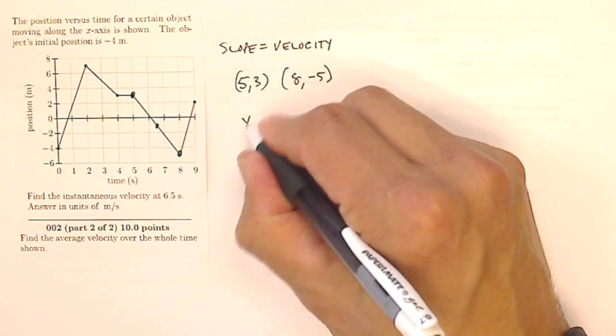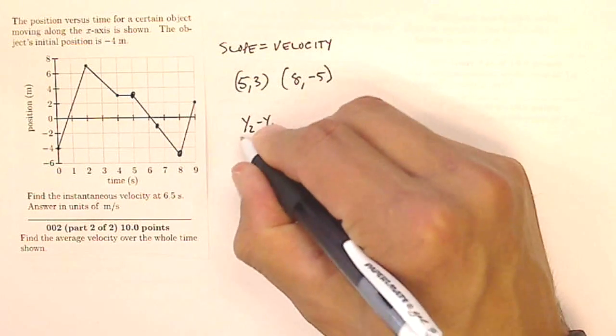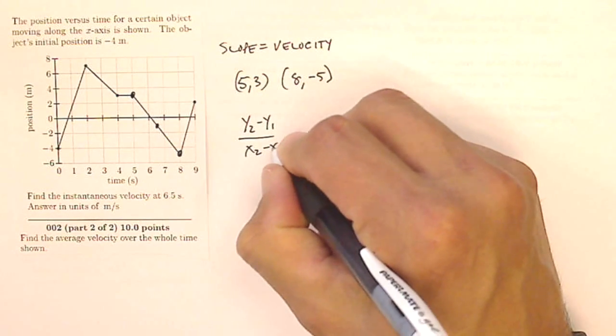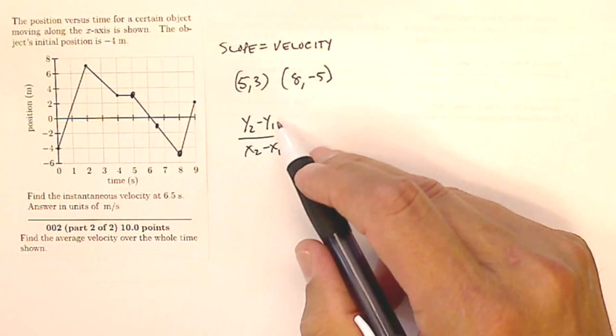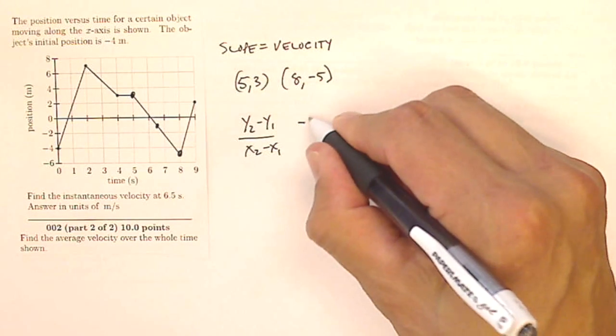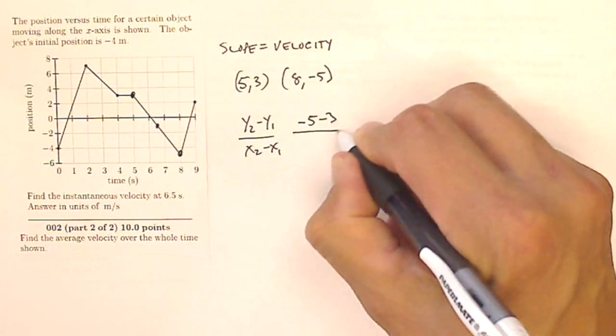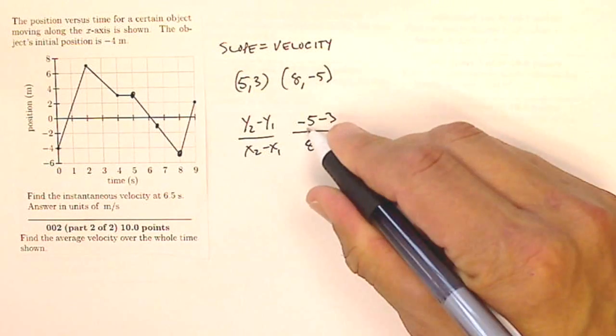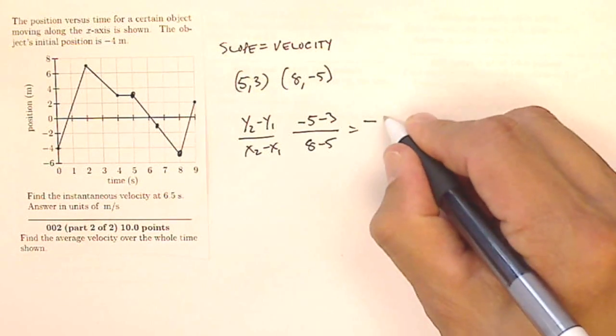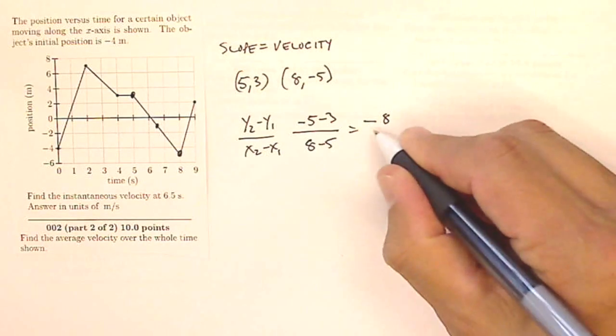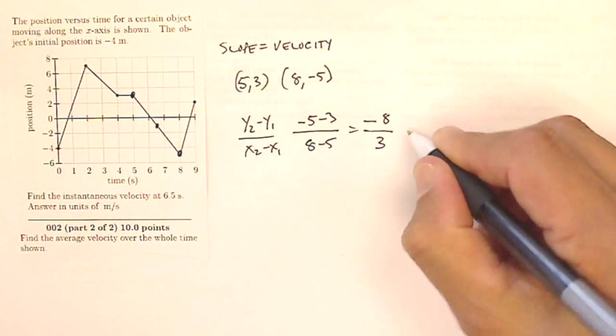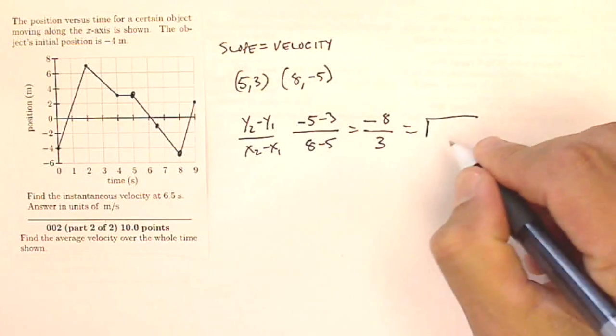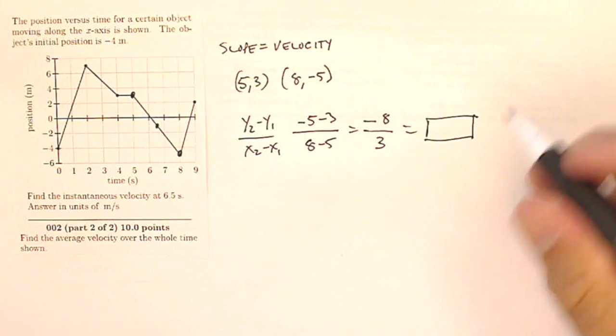I know the slope is going to be y2 minus y1 over x2 minus x1. So y2 minus y1 is going to be negative five minus three over x2 minus x1 is eight minus five. So in my case, I've got negative eight divided by three. And that's going to give me some number for the slope. Calculate that. Don't try to put in a fraction.